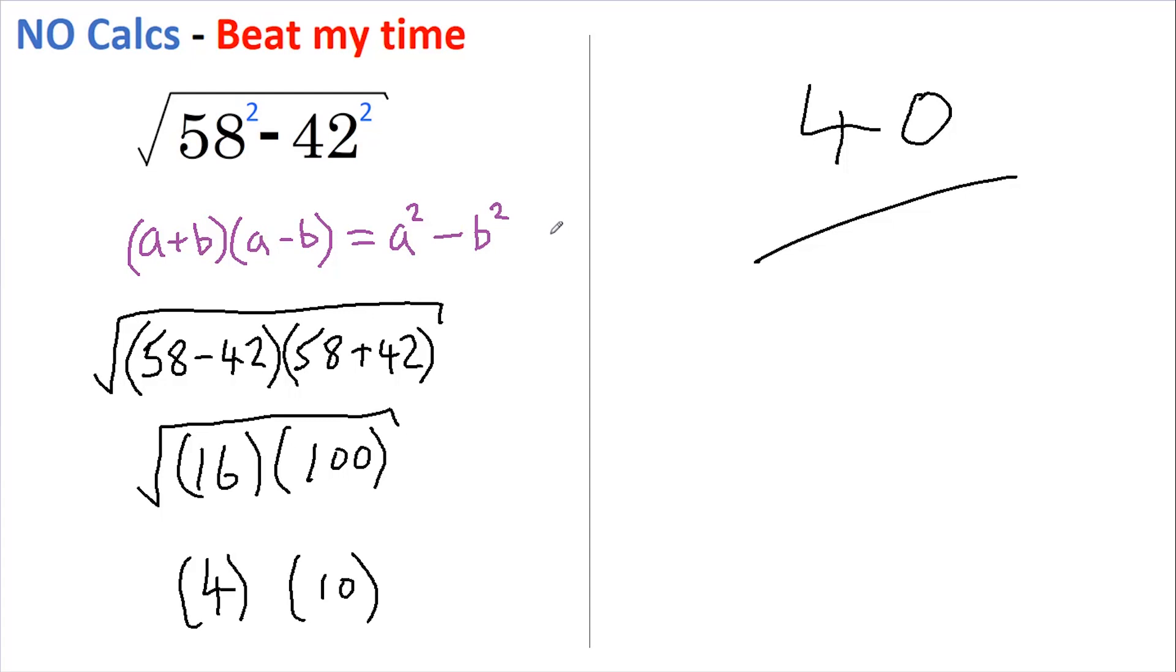two squares because it can often really help you solve problems. A couple of other pointers: if you had, say, x squared minus one, remember that is a difference of two squares because one can be written as one squared. Also remember that you can create a difference of two squares. If you had something like x minus y,